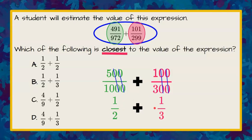So 1 half plus 1 third is an estimate which is closest to the value of that expression. If we go over to our answer choices, we can see that that is answer choice B.